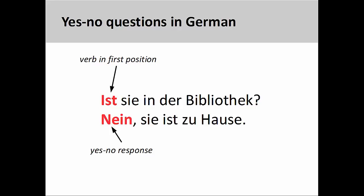There is subject-verb agreement between the ist, third-person singular form of sein, and the subject sie, third-person singular feminine personal pronoun. The question is answered with a negative nein, and additional information is volunteered. Sie ist zu Hause, she is at home.